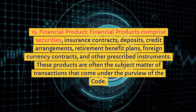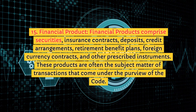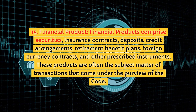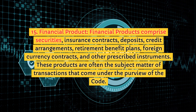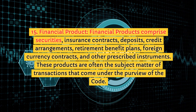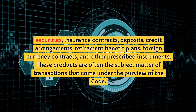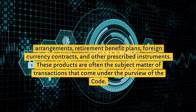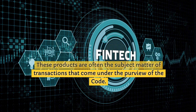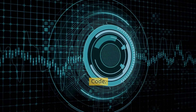15. Financial Product. Financial products comprise securities, insurance contracts, deposits, credit arrangements, retirement benefit plans, foreign currency contracts, and other prescribed instruments. These products are often the subject matter of transactions that come under the purview of the code.